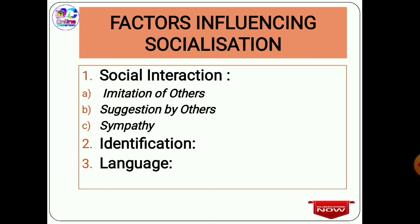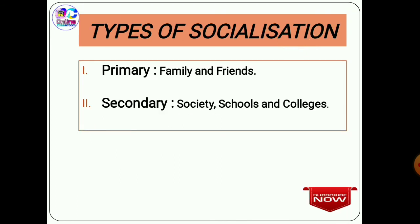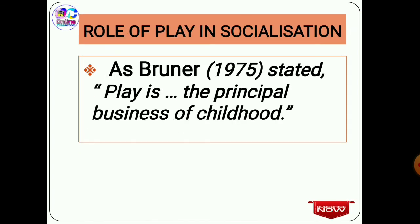The last part is the role of play in socialization. From this section, you need to know the definition given by Bruner in 1975: 'Play is the principal business of childhood.' This is because play develops creativity within a child, and education must take into account the modern problems of children and their understanding of the play process. However, the more important topics from this chapter are the factors, types, and agents of socialization, as exam questions are mainly concentrated from those three parts.